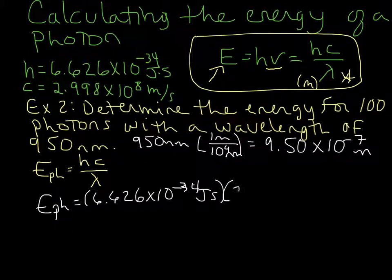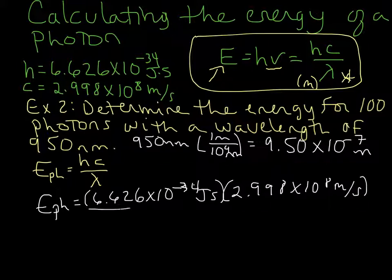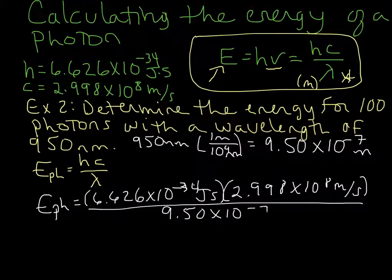we're going to multiply that by the speed of light. So that's c, and divide all of that by 9.50 times 10 to the negative 7 meters.